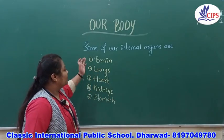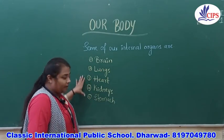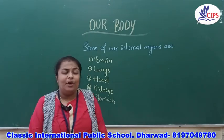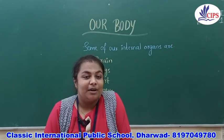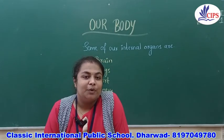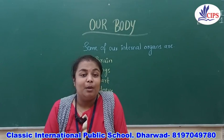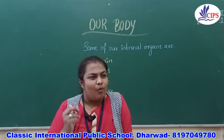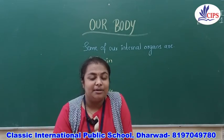Some of our internal organs are brain, lungs, heart, kidneys, and stomach. Let us study these internal organs one by one. First one is brain — it is inside our head. What is the work of the brain? Our brain is the main organ which controls all other body organs. All body parts are connected to the brain. The brain sends messages to the other body parts and also receives messages.